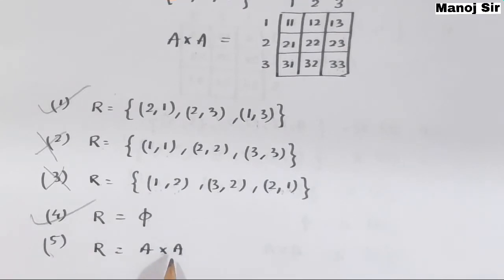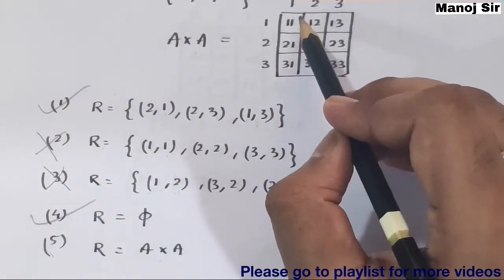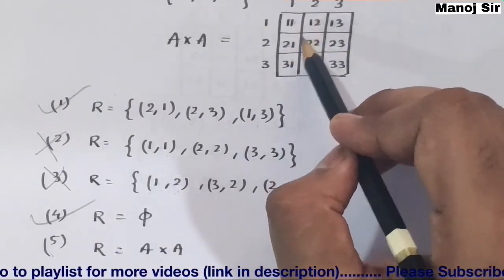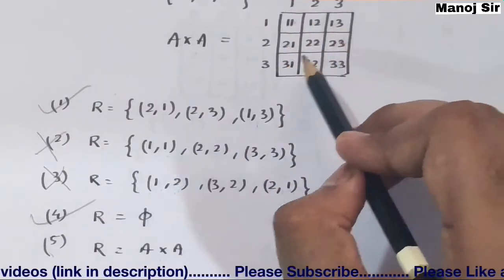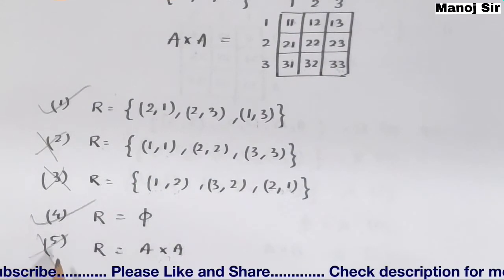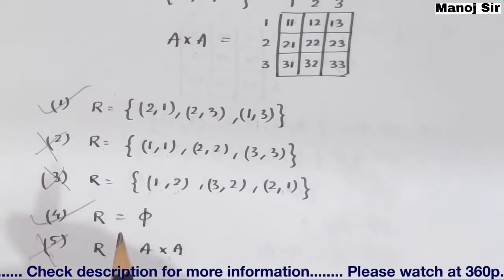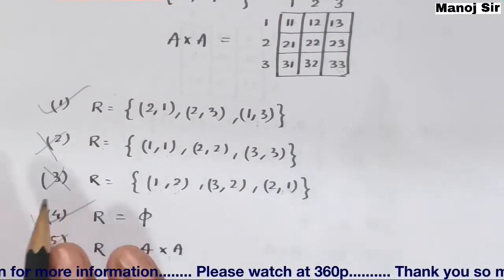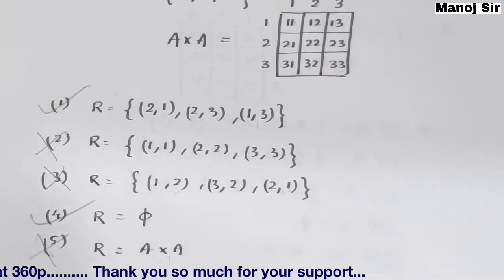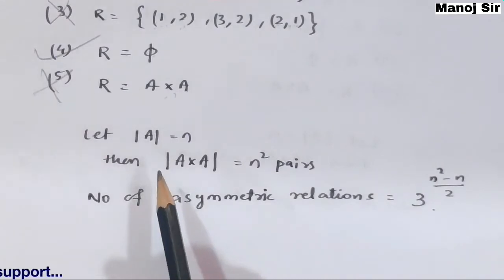Fifth example: R = A × A — the complete Cartesian product. This contains all nine pairs, including symmetric pairs such as (1,2) and (2,1). Since symmetric pairs are present, this relation is not an asymmetric relation.